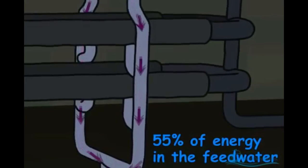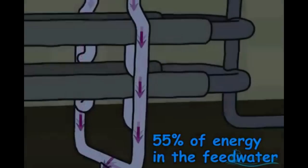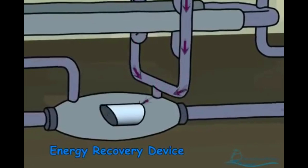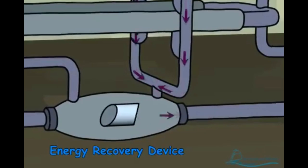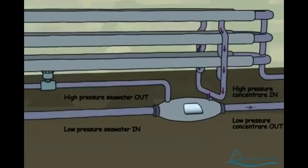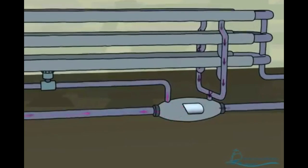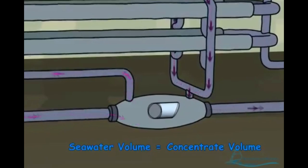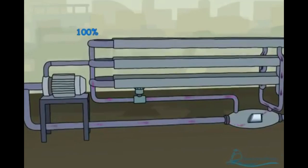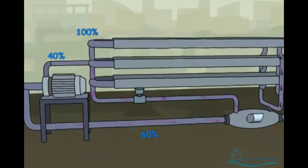The concentrated salt stream retains about 55% of the total energy of the seawater stream that was originally fed to the membranes. To reduce the energy required to operate the reverse osmosis plant, the pressurized concentrated stream is piped into an energy recovery device. Here, up to 98% of the energy of the concentrated salt stream is transferred to an equal volume of incoming seawater in an isobaric energy recovery device. This significantly reduces the plant's operating costs by recovering that energy and using it to pressurize 60% of the seawater that is fed to the membranes.